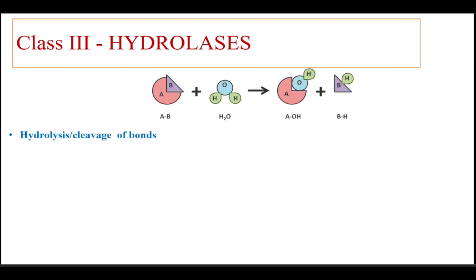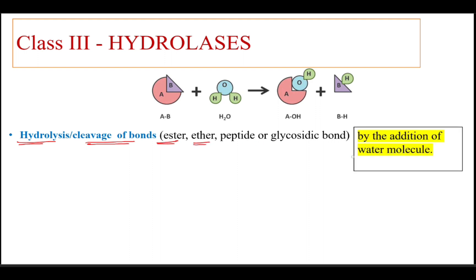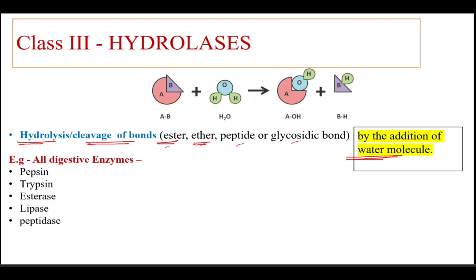Class 3: hydrolases. There is hydrolysis or cleavage of bonds — specifically ester bonds, ether bonds, peptide bonds, or glycosidic bonds — and this occurs with the addition of a water molecule. Examples: all digestive enzymes are included under hydrolases, such as pepsin, trypsin, esterase, lipase, and peptidase.